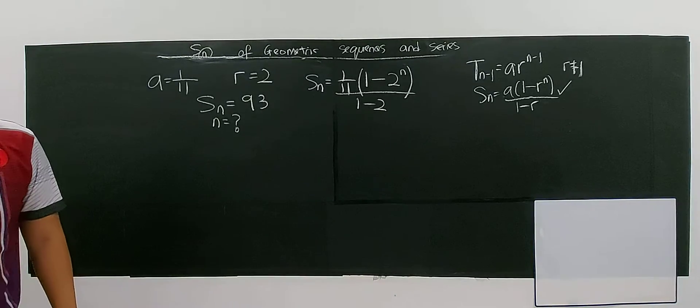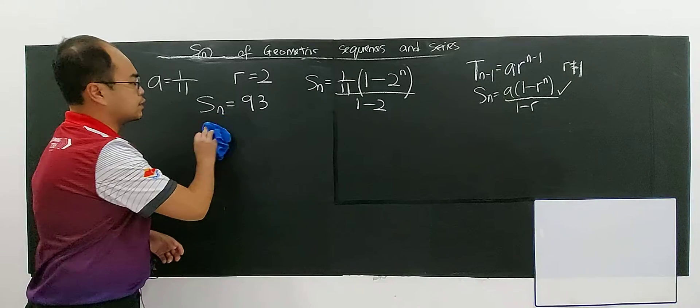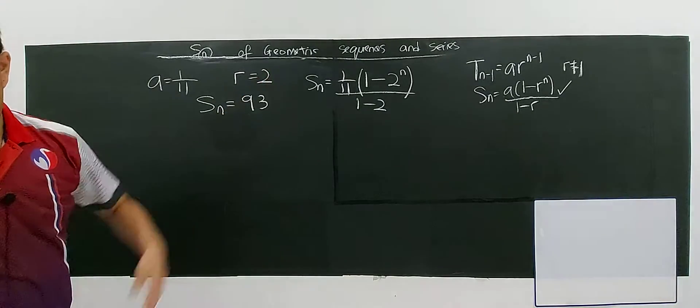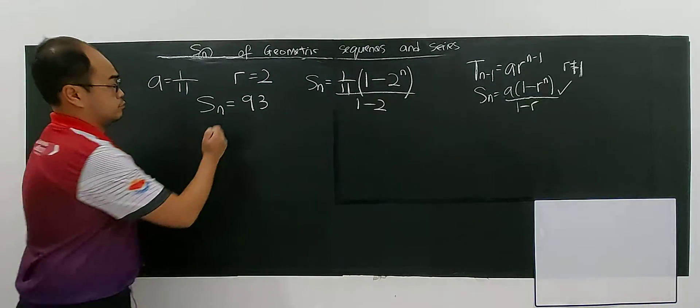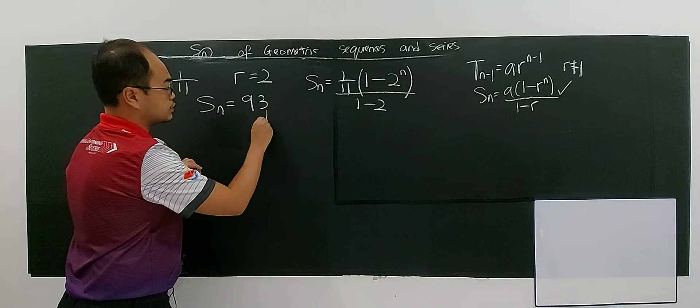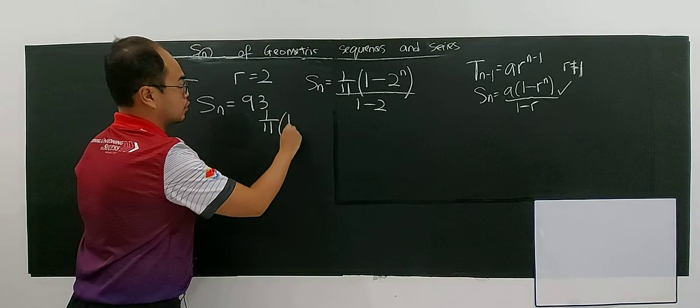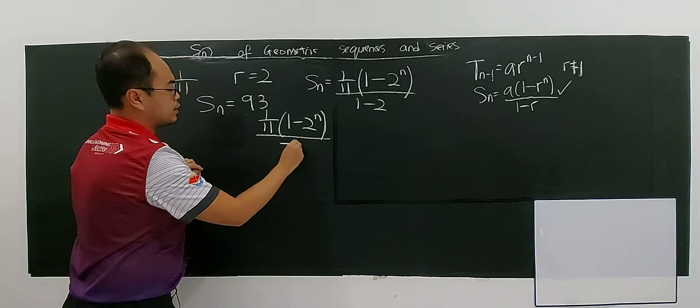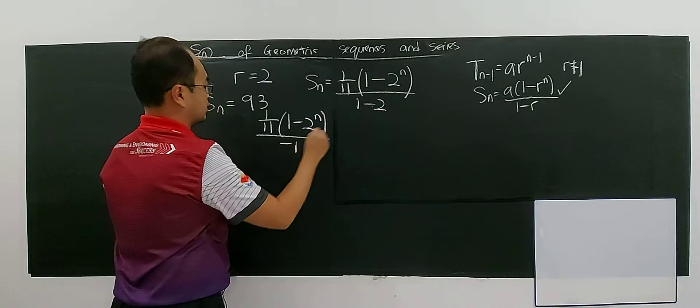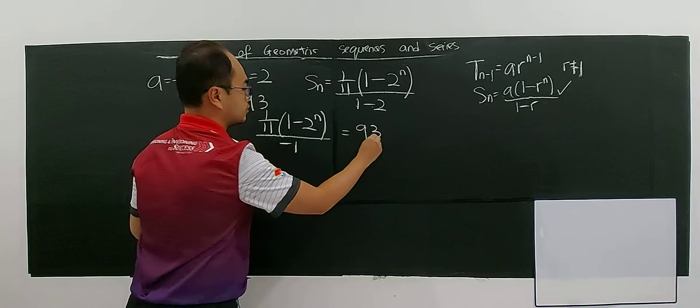This is more on algebra now. The concept here is apply the formula correctly. So now I'm going to say that (1/11) times (1 - 2^N) divided by negative 1, which is (1 - 2), equals 93.